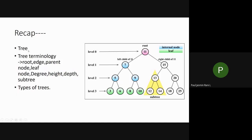First, we discussed the tree data structure. A tree is a nonlinear data structure which is used to represent hierarchical data. We go for a tree data structure when data is in a hierarchical form. This tree data structure is a collection of nodes in which nodes are connected by means of edges. Nodes are used to store the content or value. In the diagram, all the round parts denote the nodes.